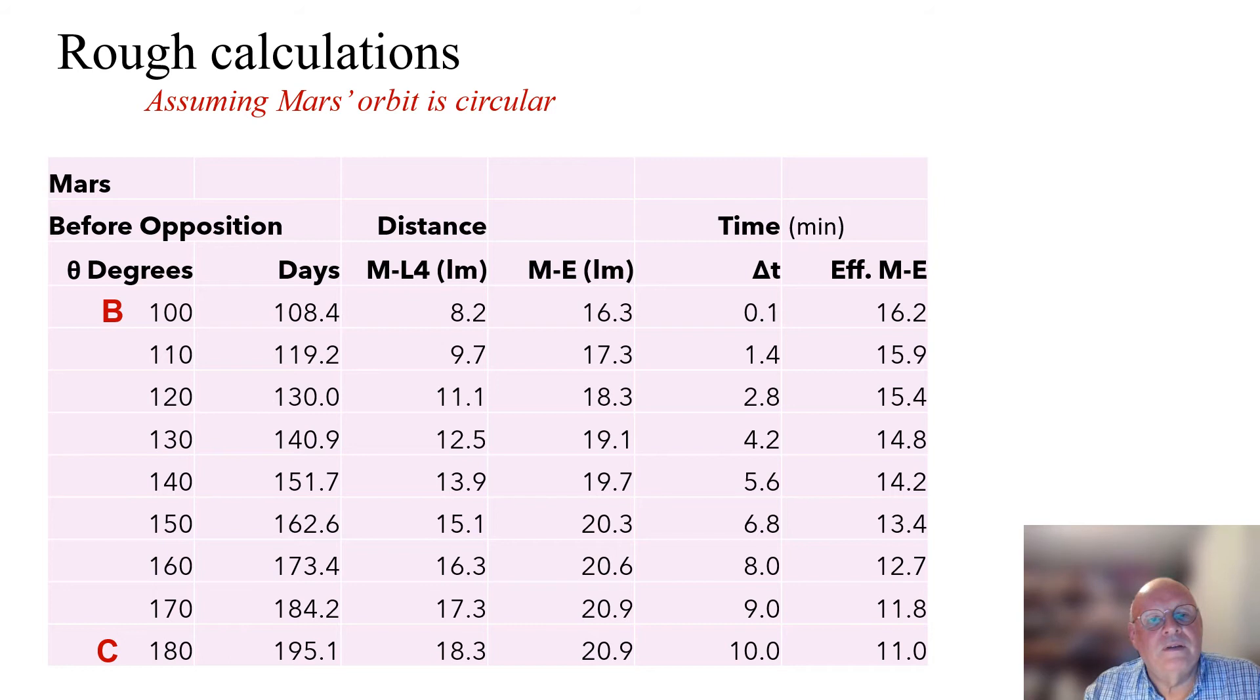The next two columns give the Mars L4 distance and the Mars-Earth distance in light minutes. And, of course, the Earth L4 distance is always a constant. Delta T gives the difference in time between when observations were made on Earth and when they were made on Mars.